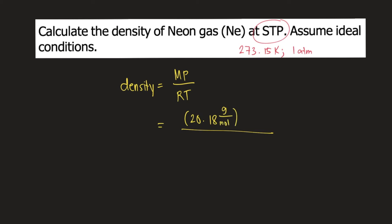P stands for pressure and the standard pressure is 1 atm. R is the gas constant, 0.0821 liter atmosphere per mole Kelvin. And T is temperature. So the standard temperature is 273.15 Kelvin.